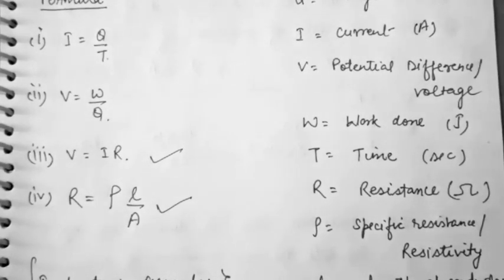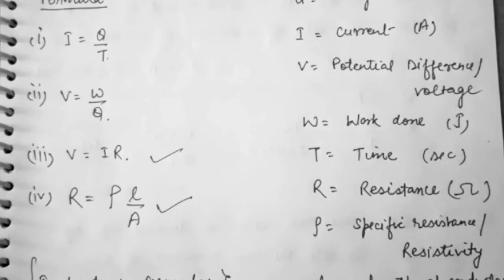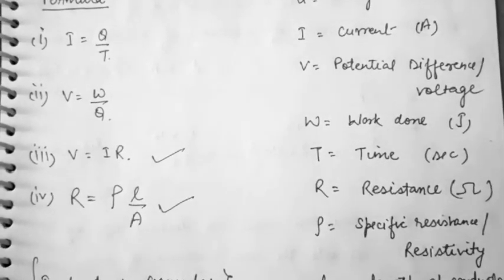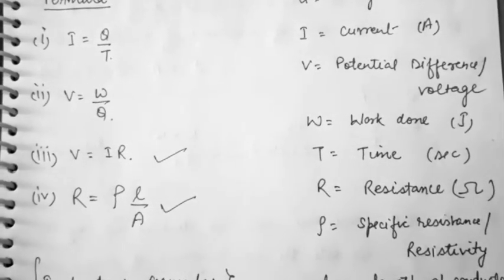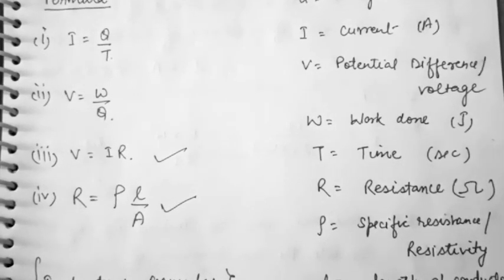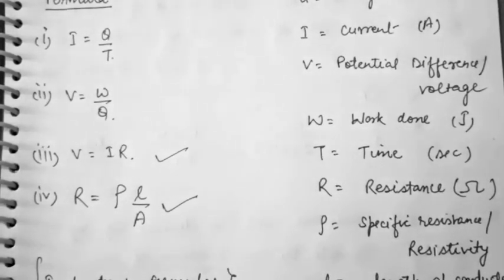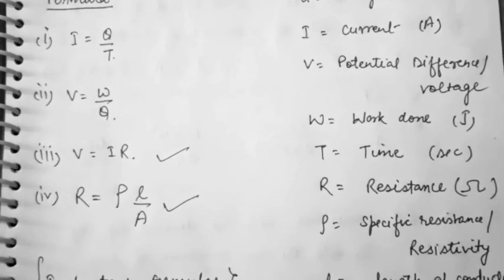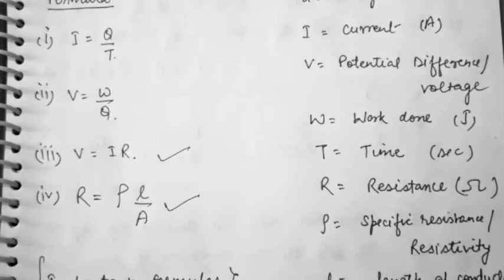The first formula is I = Q/T. We know I is current, Q is charge and T is time. We measure charge in coulomb, time in second and I in ampere. From this formula it is very clear that current is the rate of flow of charge.